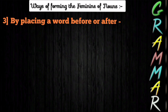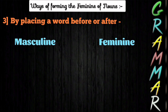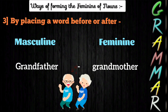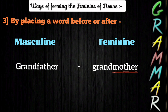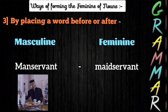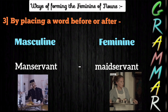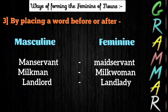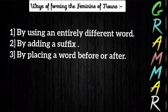The third way of conversion is by placing a word before or after. For example, the feminine gender for 'grandfather' is 'grandmother' — we have added the word 'mother' after 'grand'. Another example: the feminine gender of 'man-servant' is 'maid-servant' — here we have used the new word 'maid' before 'servant'. Similarly, we add a word before or after for conversion of masculine to feminine gender. With the help of these three rules, you can now easily convert a masculine noun into its feminine form.